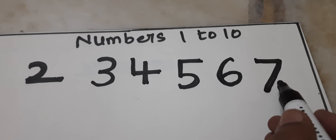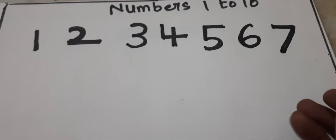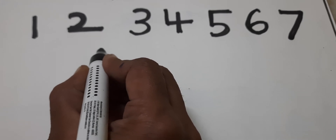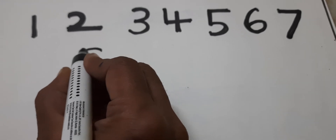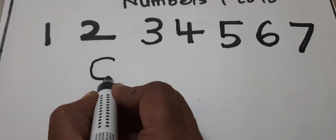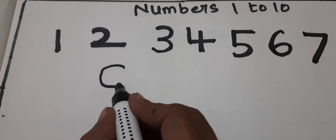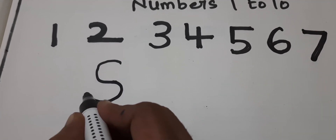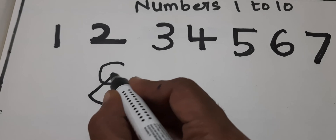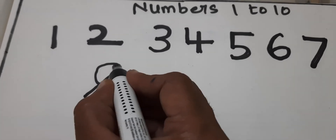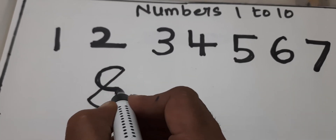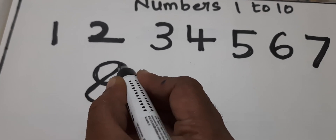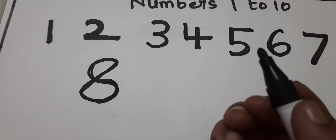After 7 comes 8. How to write 8? We write C, then inverted C, then inverted C, then slanting line — 8.